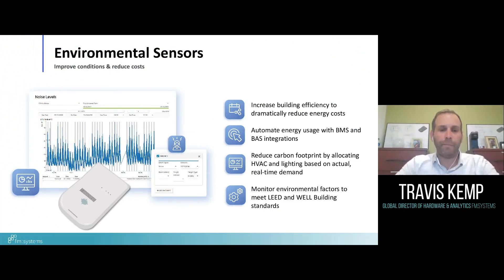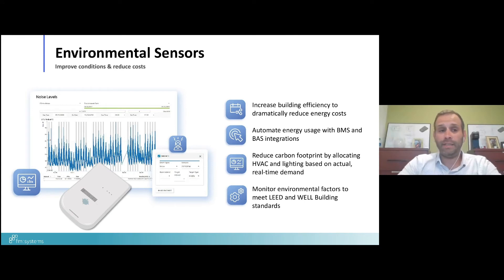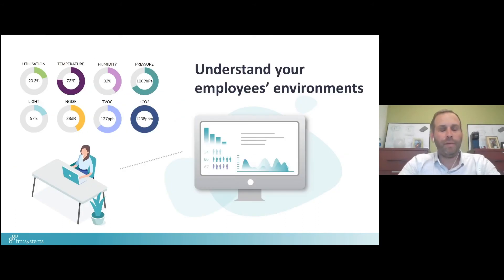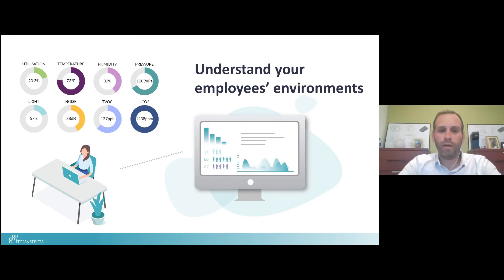Environmental sensors are a really emerging sensor market becoming even more important as you think about return to work. Once integrated with BMS or BAS systems, you can greatly reduce energy and lighting consumption, tailor lighting and heating based on actual office staff needs, and reduce your carbon footprint by allocating HVAC or lighting based on actual real-time demand versus theoretical demand. This supports meeting or exceeding WELL and LEED building standards, which are very important. Utilization is driven by that PIR sensor.